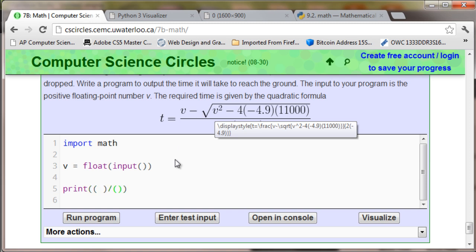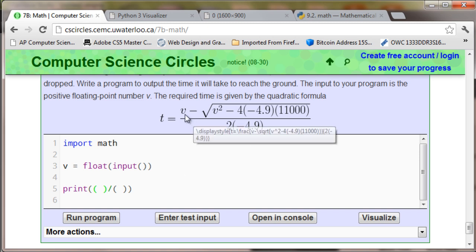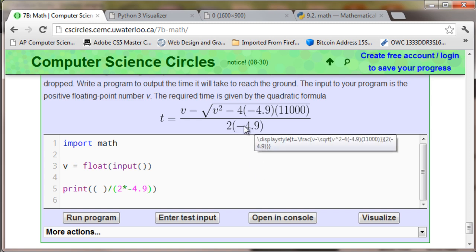So we have this two times negative 4.9, and then we have this up here. This is going to be divided by these two parentheses items. And note that these parentheses are very important. So, 2 times negative 4.9. That represents this down below.